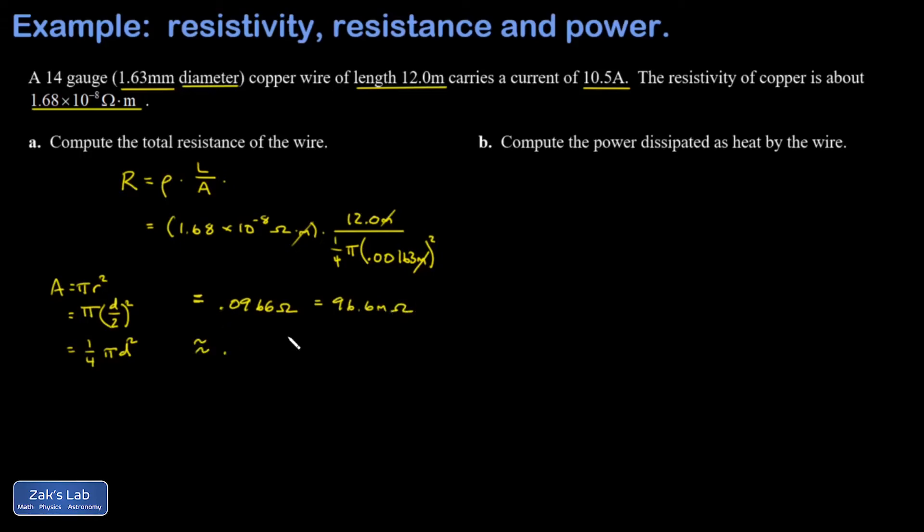I could write that as 96.6 milliohms, probably a little more appropriate unit. This is approximately 0.1 ohms, a tenth of an ohm, and that's not very much resistance compared to the types of circuit elements we would be running off of a wire like this with this kind of current magnitude. This is why we're able to many times just ignore the resistance of copper wires and say they're approximately resistanceless.